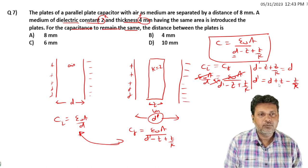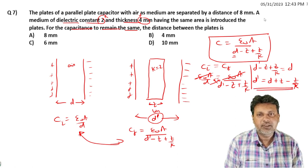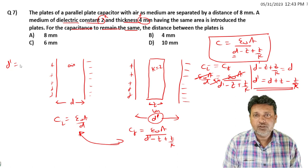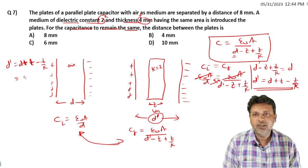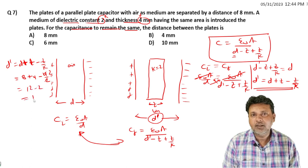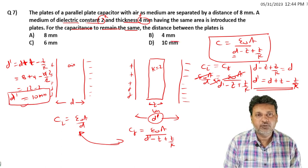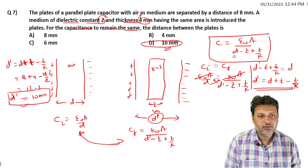Now put the values. This equals 8 millimeters plus T, where T is 4 millimeters, minus T by K which is 4 by 2. Initially 8 millimeters, plus thickness 4 millimeters minus 4 by 2 gives us 8 plus 4 minus 2 equals 10 millimeters. D dash value is 10 millimeters. So the third option is the correct option. Next question.